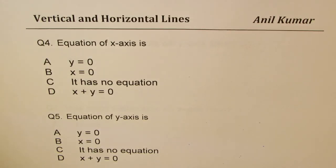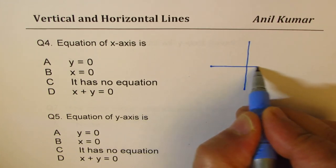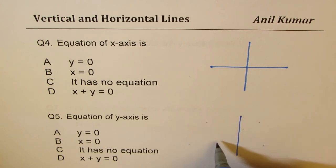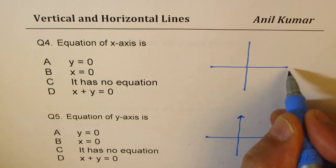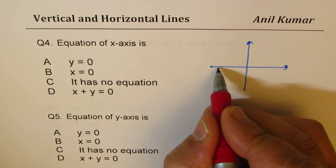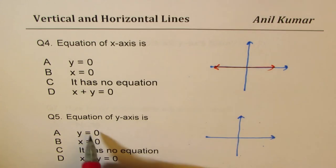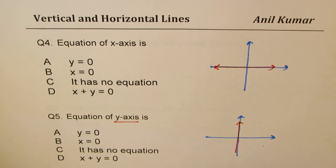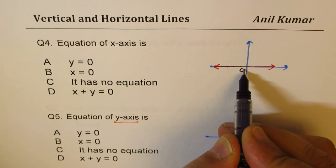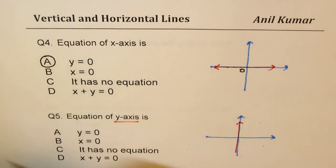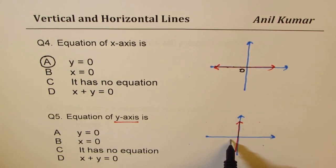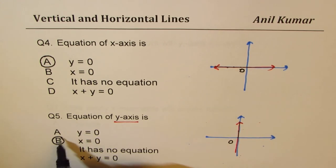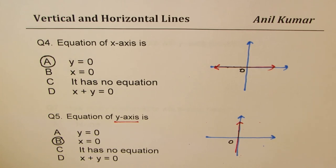Question five: what is the equation of the X-axis? On the X-axis, the Y value is 0 everywhere, so the equation is Y = 0. Question six: what is the equation of the Y-axis? On the Y-axis, the X value is 0 for all points, so the equation is X = 0.